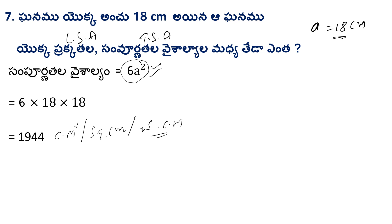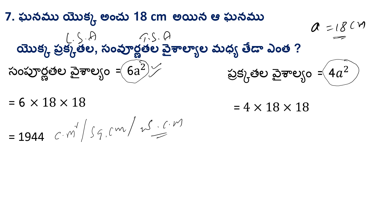Find the lateral surface area (prakatala vaishalem). The formula is 4a². Substituting a = 18 cm: 4 × 18 × 18 = 1296 square centimeters.